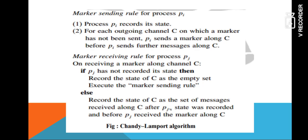This is the algorithm. We have two rules: the marker sending rule and the marker receiving rule. In the marker sending rule, assume process Pi wants to take a global snapshot. Initially it records its own state, then prepares a control message called a marker, and this marker is sent to all outgoing channels. In the marker receiving rule, whenever some other process Pj receives this marker, it has to check whether it has already recorded its state or not. If it has already recorded its state, it records the state of the incoming channel and executes the marker sending rule again.